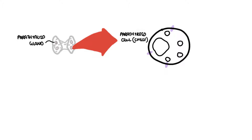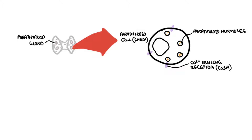Let's talk about the normal physiology first. The parathyroid gland contains parathyroid cells called chief cells. The chief cells contain parathyroid hormones which are ready to be released. These cells respond to calcium levels in the blood via calcium sensing receptors, abbreviated CASR. This is a G-protein-coupled receptor. When CASR notices that there are low levels of calcium, the chief cells will begin releasing parathyroid hormone.